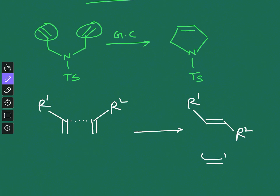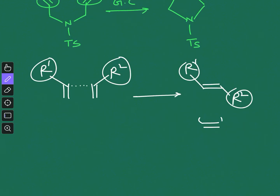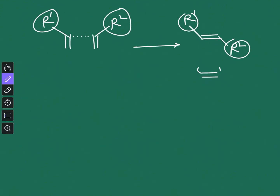Another important thing to notice is that R1 and R2 groups are always trans to one another in the product. This is the simple example of alkene metathesis.